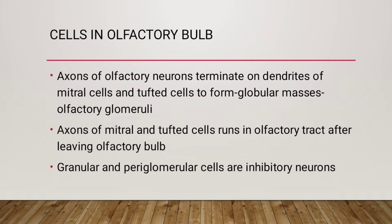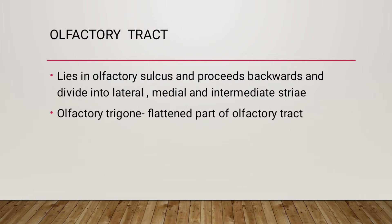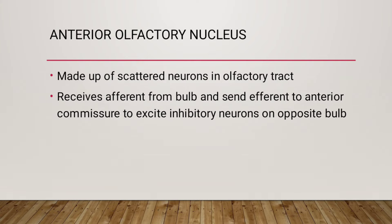Granular and periglomerular cells are inhibitory neurons. The olfactory tract lies in the olfactory sulcus and proceeds backwards, dividing into lateral, medial, and intermediate stria. The olfactory trigone is the flattened part of the olfactory tract. The anterior olfactory nucleus is made of scattered neurons in the olfactory tract that receive efferents from the bulb and send efferents to excite inhibitory neurons on the opposite bulb.